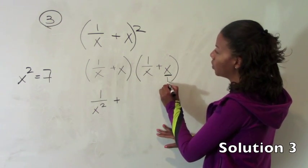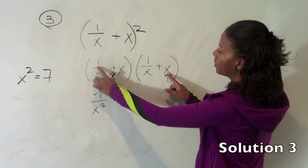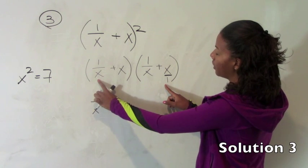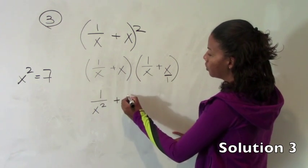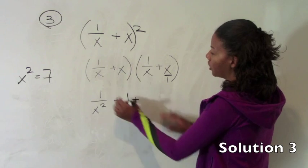If you don't remember that, however, you can put the x over 1 over x over 1 and multiply your numerators over your multiplied denominators. You'll get x over x which is 1. Those are your outside terms.